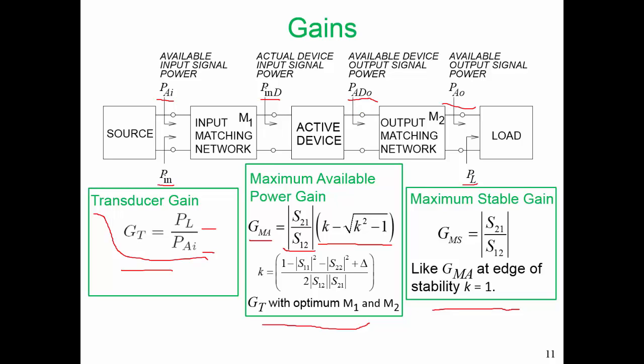The maximum available power gain, GMA, is given by that rather long expression. And if our amplifier is potentially unstable, we want to find GMA at the edge of stability, when K is equal to 1, and that gain is called the maximum stable gain. So it is the transducer gain with optimum M1 and M2, but they may be detuned if we want to make sure our circuit is unconditionally stable. And our maximum stable gain is S21 over S12.